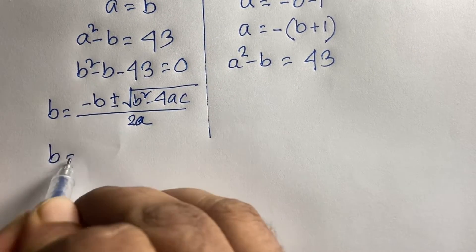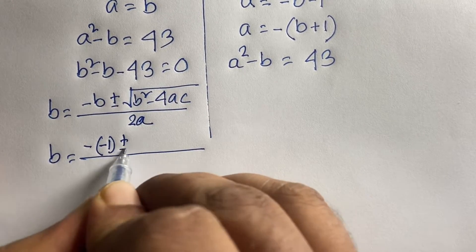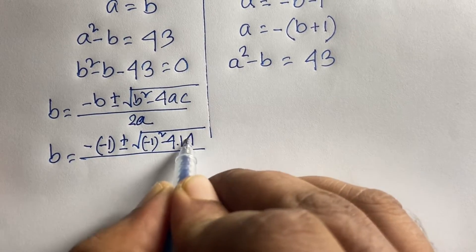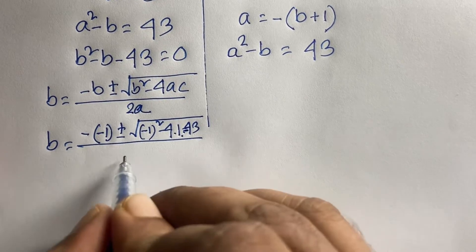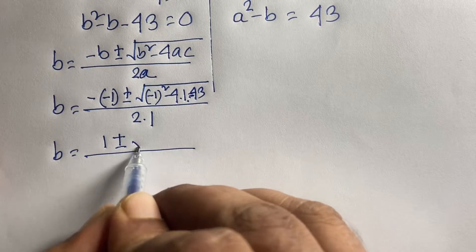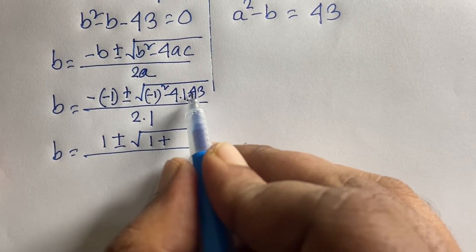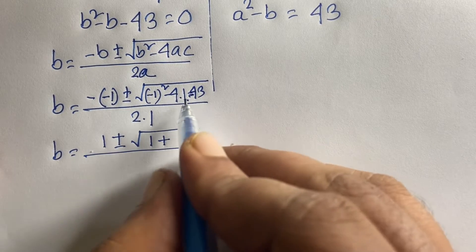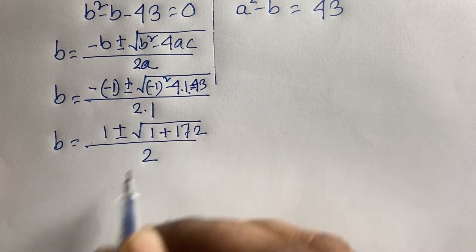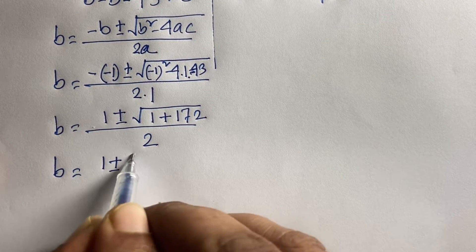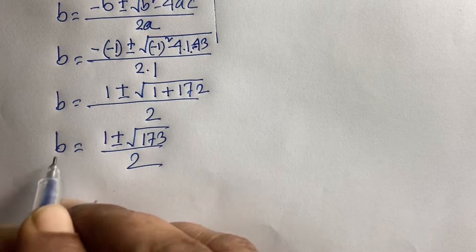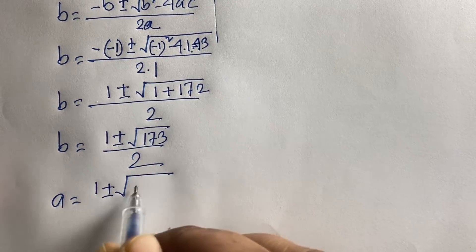Using the quadratic formula, B equals (minus b ± √(b²− 4ac)) / 2a, where b is minus 1, a is 1, and c is minus 43. So B equals (1 ± √(1 + 172)) / 2, which is (1 ± √173) / 2. Since A equals B, A is also (1 ± √173) / 2.